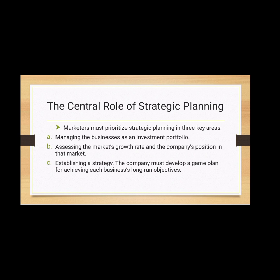SWOT stands for Strengths, Weaknesses, Opportunities, and Threats. Strengths and weaknesses refer to the positives and negatives the company itself holds. Opportunities and threats refer to external variables that exist in a company's industry. By looking at the internal and external influences on your business, you can see where you should and shouldn't focus resources. The third key area is establishing a strategy: the company must develop a game plan for achieving each business's long-term objectives. Long-term objectives may emerge early when formulating a strategic plan, and long-term goals are larger in scope and will take longer to accomplish.